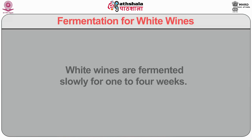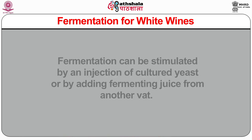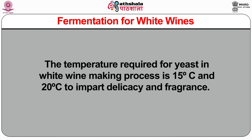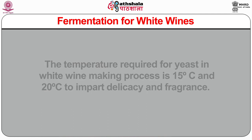Fermentation for white wines: white wines are fermented slowly for one to four weeks. Fermentation can be stimulated by an injection of cultured yeast or by adding fermenting juice from another vat. The temperature required for yeast in white wine making is 15°C to 20°C to impart delicacy and fragrance. The temperature determines the extent of fermentation and the style of wine desired — the lower the temperature, the more time the wine will take to ferment, resulting in higher quality wines; the higher the temperature, the quicker the fermentation but also often lower quality wines. Fermentation vats can be made of stainless steel or wooden vats. Note that while making white wines, winemakers prevent malolactic fermentation.